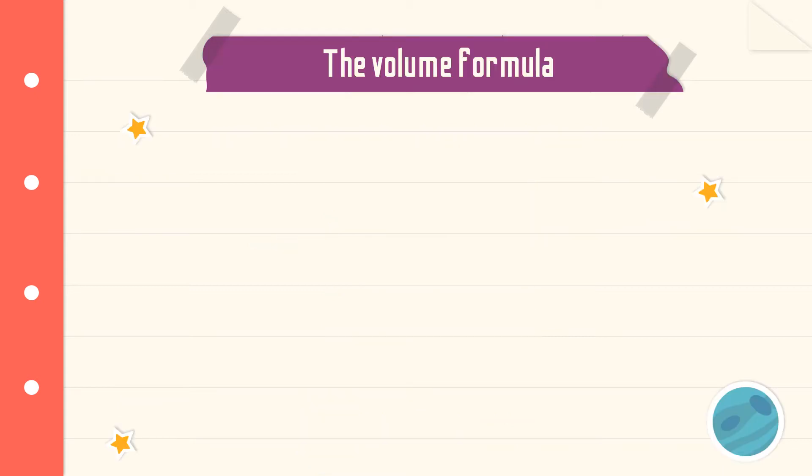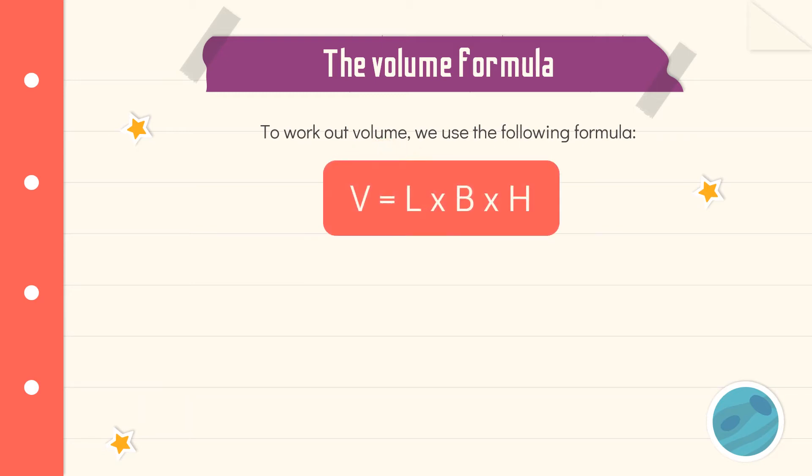So you remember the formula of perimeter is P equals S plus S plus S plus S. The number of S's obviously depends on how many sides you have in your shape. The area formula was A equals L times B. So that means length times breadth. The volume formula that we're going to have a look at today is a little bit longer. So to work on volume, we use the following formula: V equals L times B times H. So it's the same as the area formula. We've now just added on one more dimension, height. So we're going to be timesing three numbers together now.